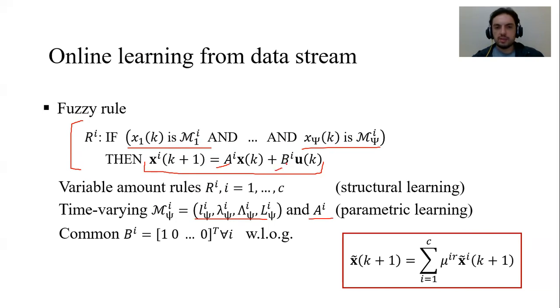But the B matrix, the actuation matrix without loss of generality is common for all rules, which means basically that the control input is applied to the first state. But the other states are also controlled because of these covariance elements of the system matrix. The output of the fuzzy model is a fuzzy combination of the local contributions.